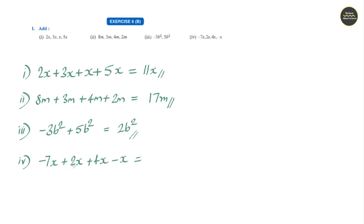Question number 4: minus 7x plus 2 minus 5x plus 4. Grouping the x terms: minus x and minus x gives minus 2x.